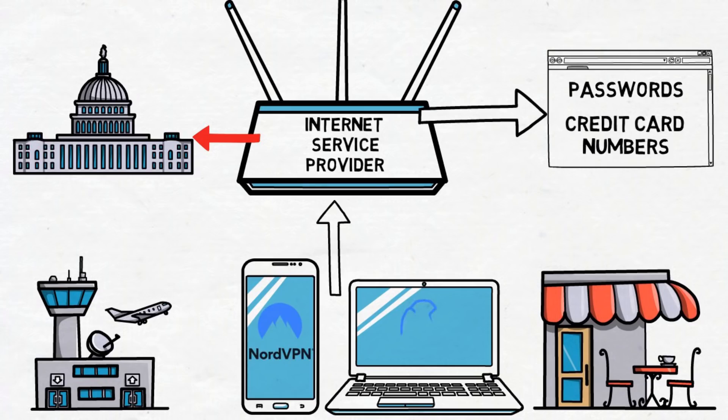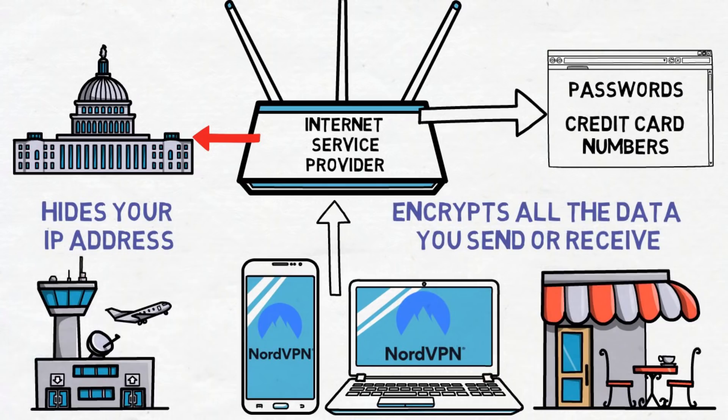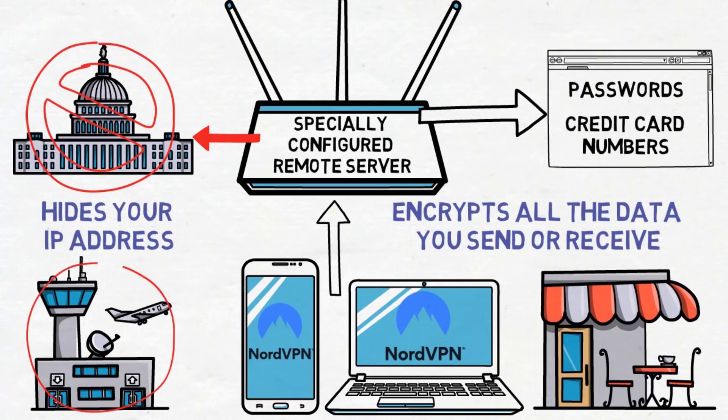And here's where NordVPN comes into play. NordVPN hides your IP address and encrypts all the data you send or receive by tunneling your internet traffic through a specially configured remote server. The encrypted data then looks like gibberish to anyone who intercepts it. It's completely impossible to read.